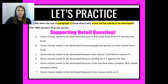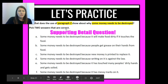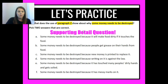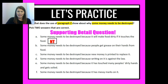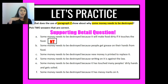Let's go back to our question — I need to figure out what the use of paragraph two shows about why some money needs to be destroyed. Answer A: some money needs to be destroyed because it will make food dirty if it touches the food. Not true. Paragraph two didn't say anything about money making food dirty. It talked about how people get food on their hands and then touch money, making the money dirty — so A is not correct.